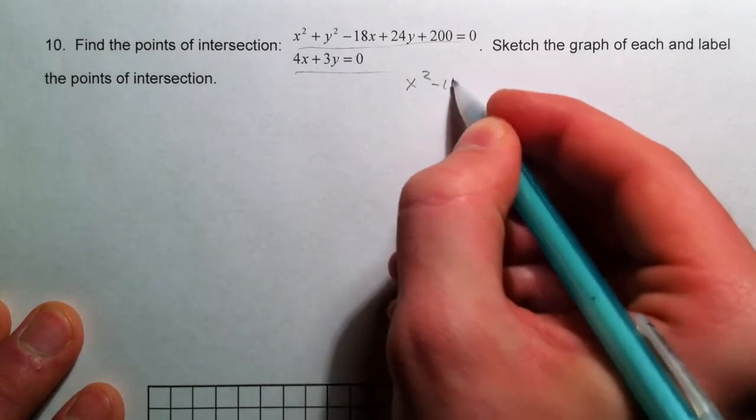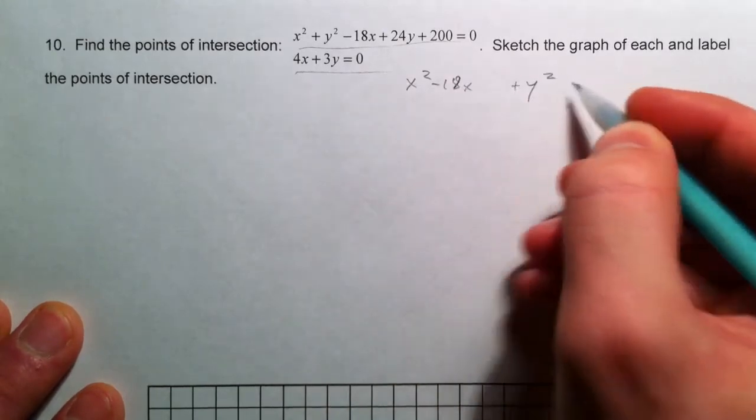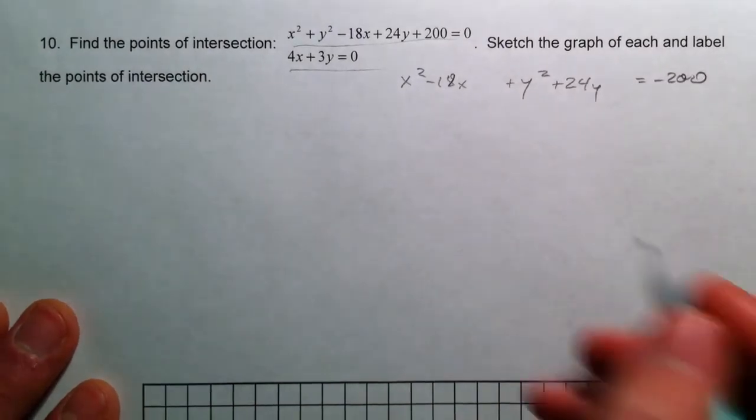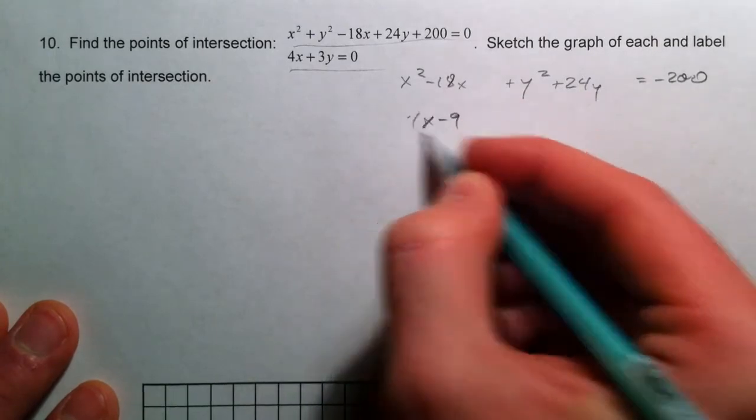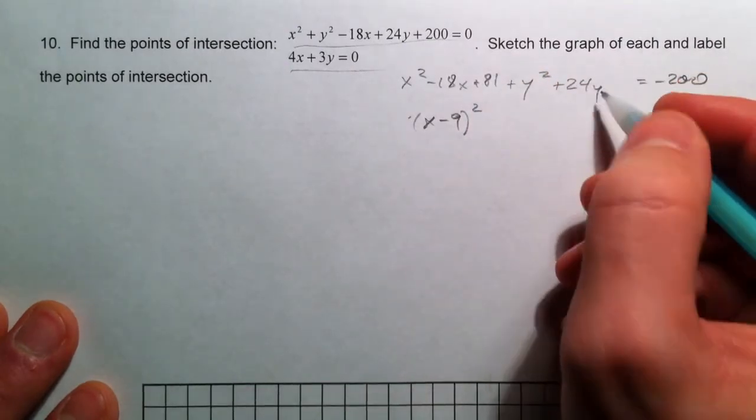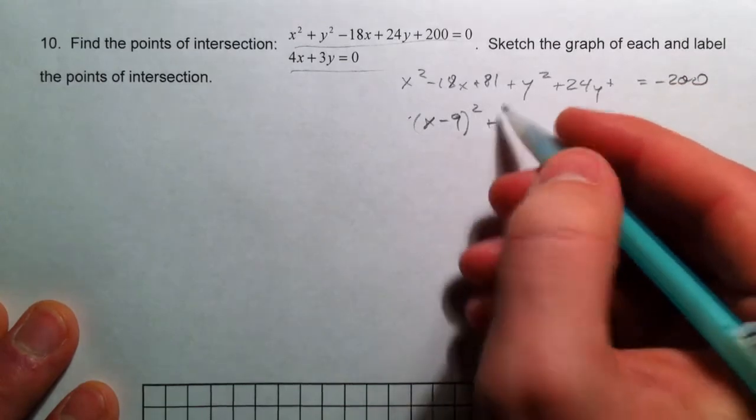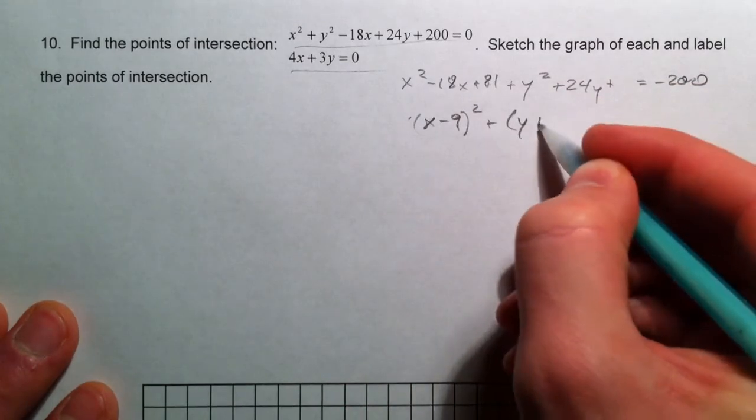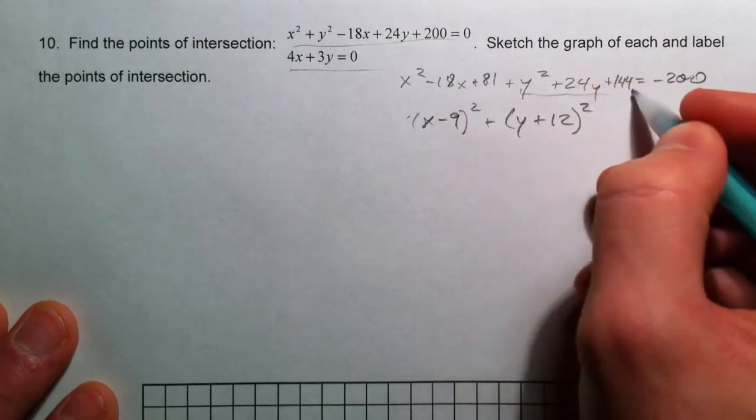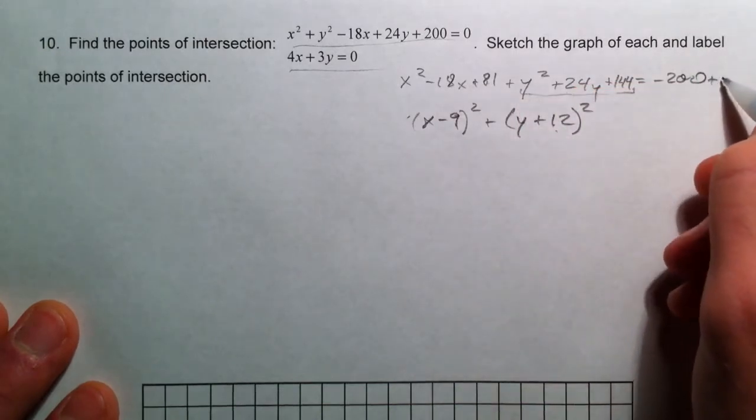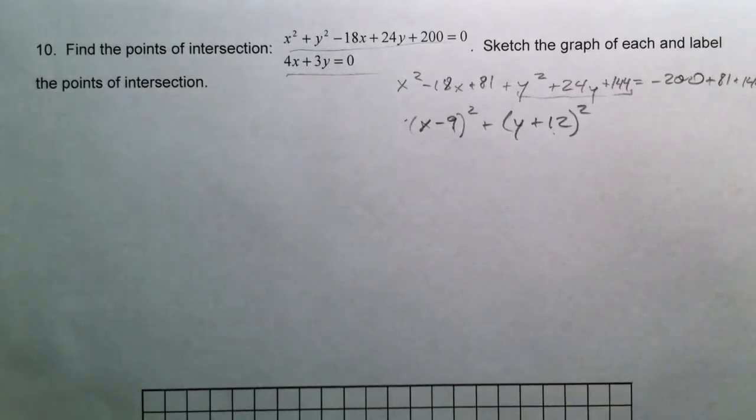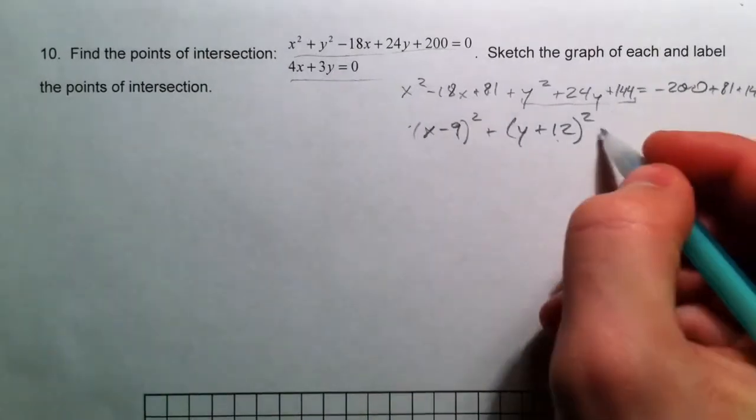So, just like we've been doing, x squared, 18x. x minus 9. So, plus 81. 9 squared is 81. Y plus 12. Half of 24 is 12, 12 squared is 144. So, that factors into that. So, we add 81, we add 144, and we get 25.